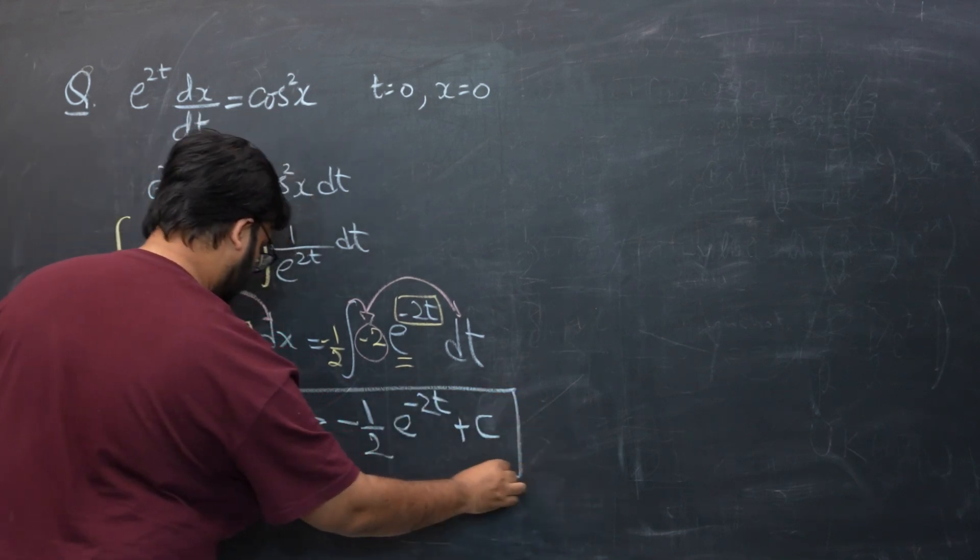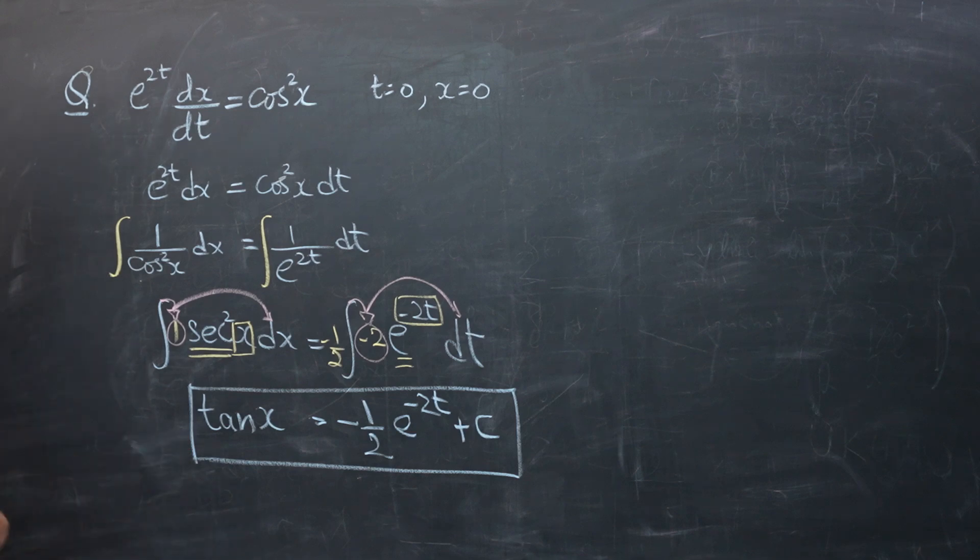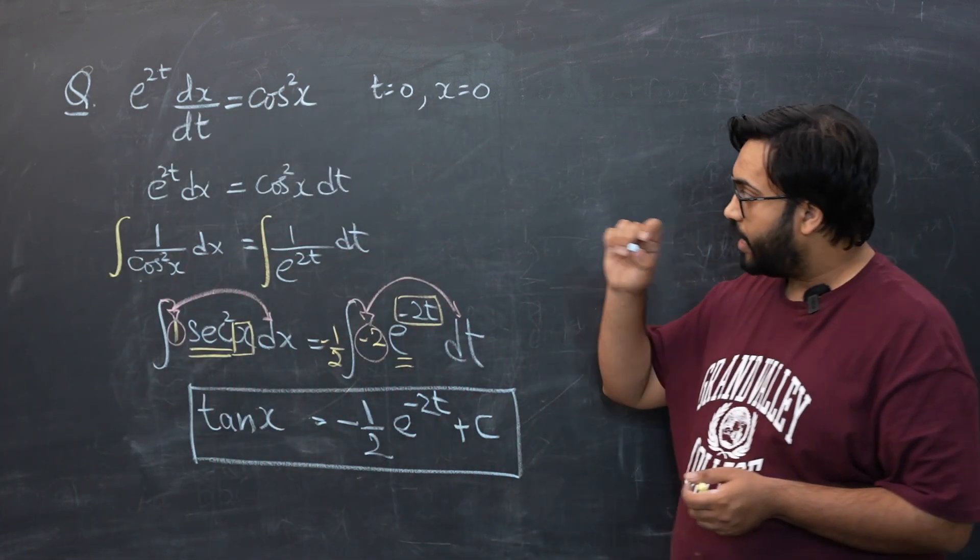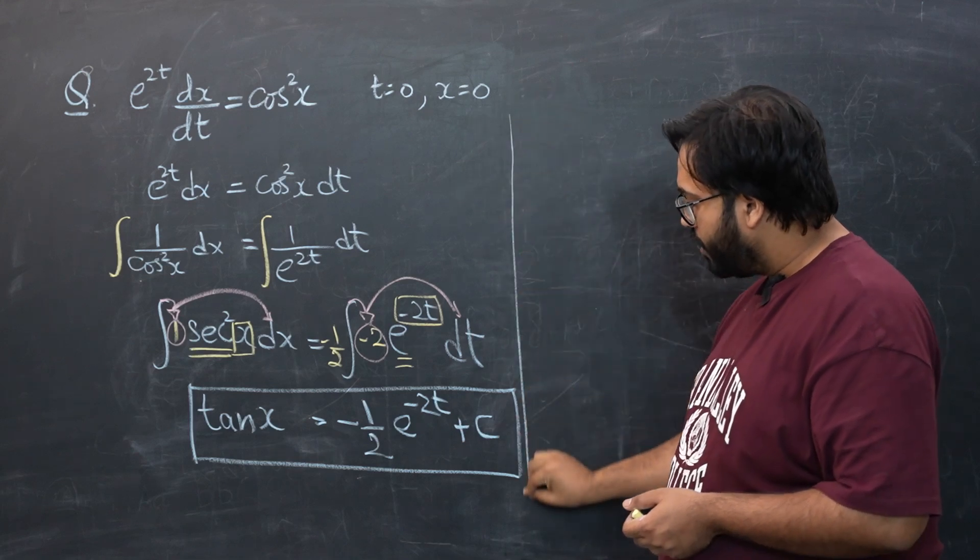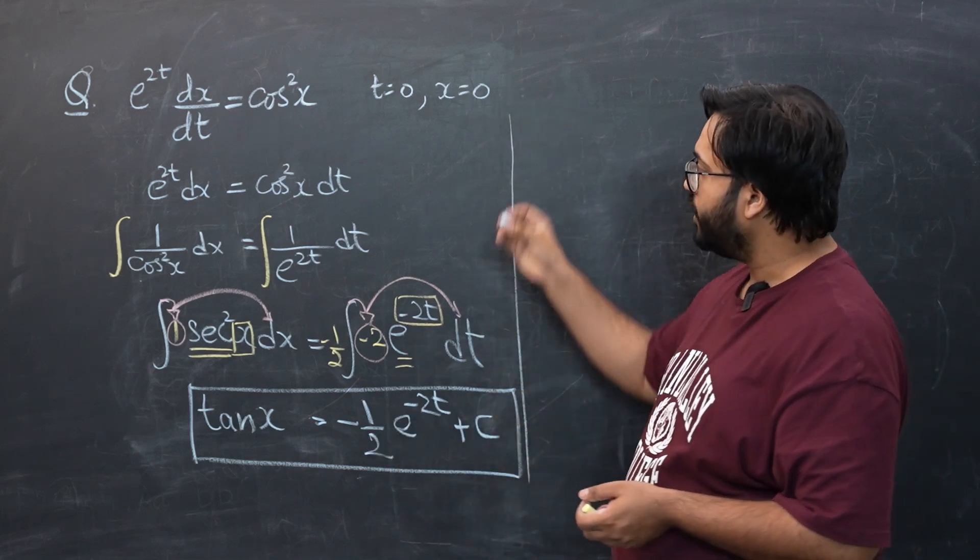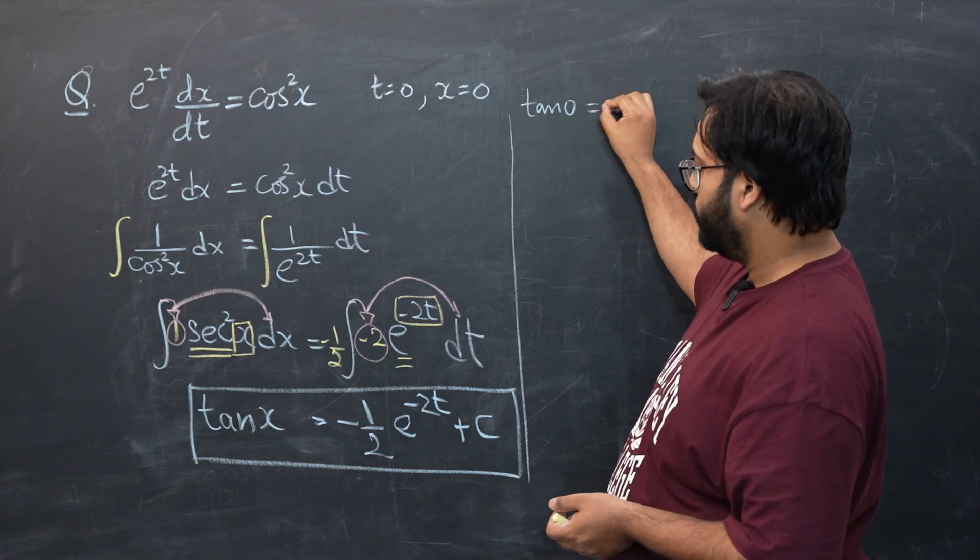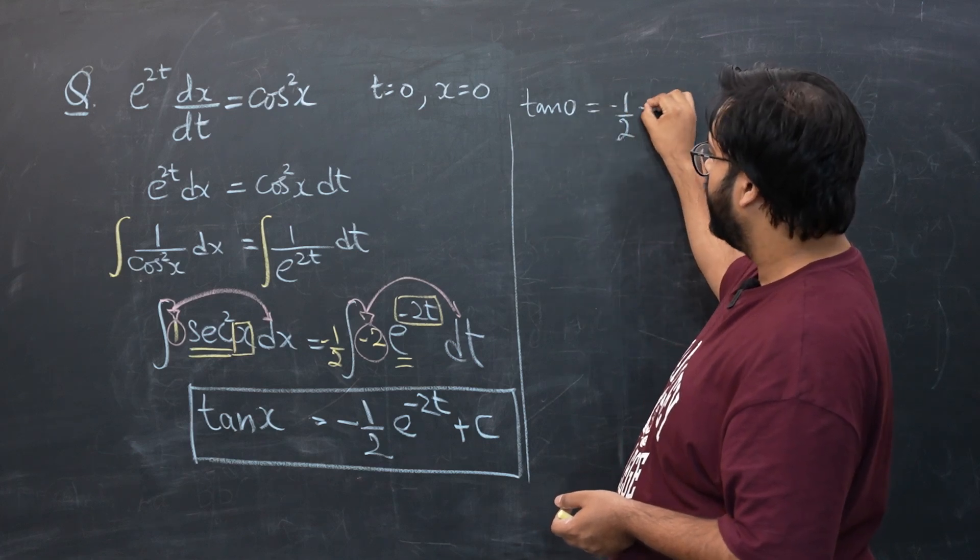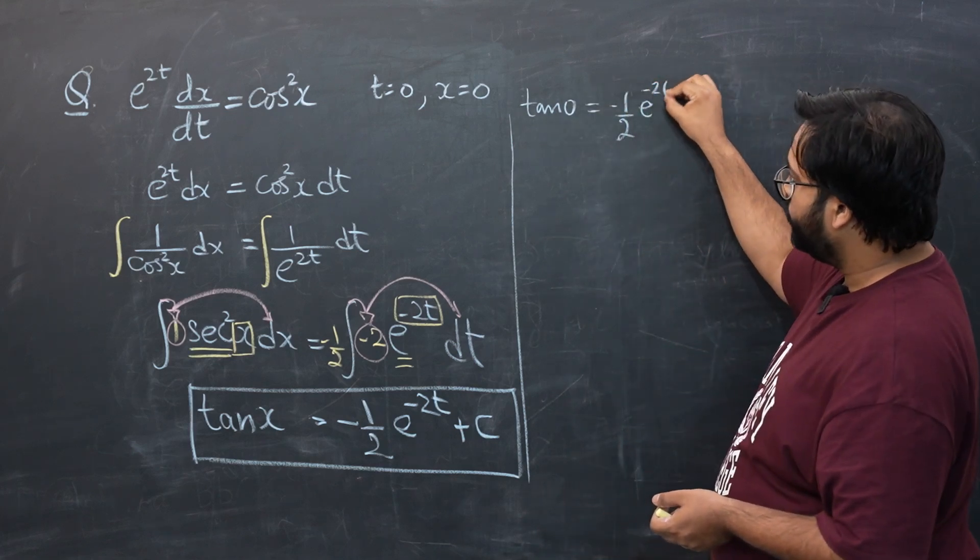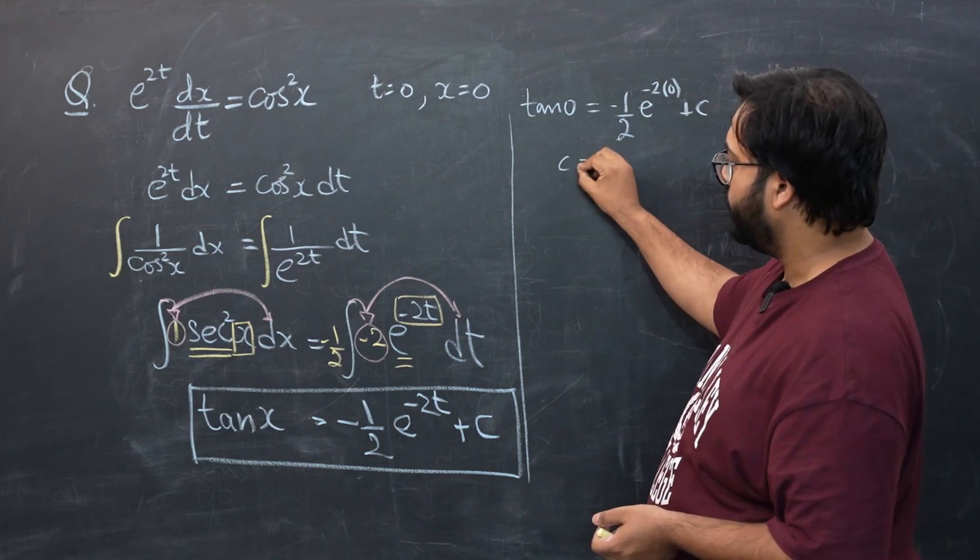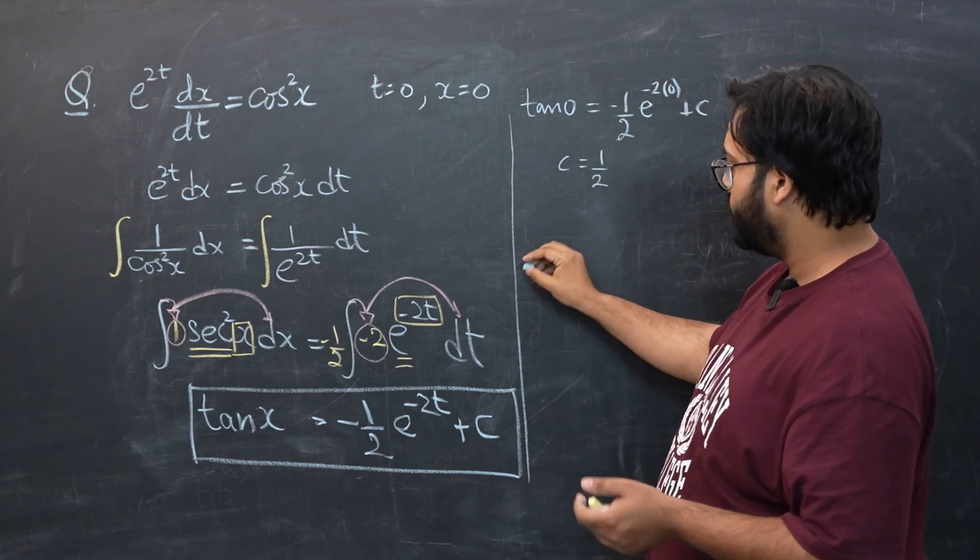Now let's put the value of t and x over here and we will have the value for c. So tan(0) = -1/2 e^(0) + c. And from here I think c will be equal to 1/2, so let's plug in that.